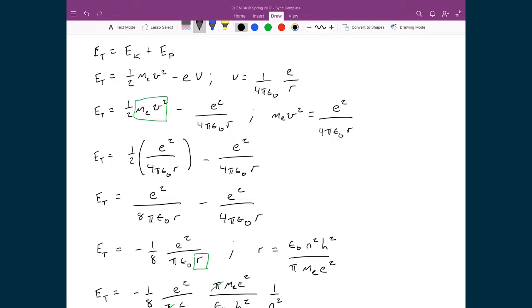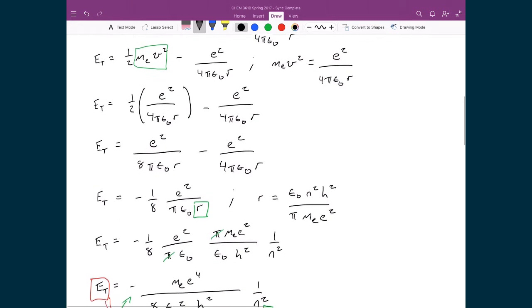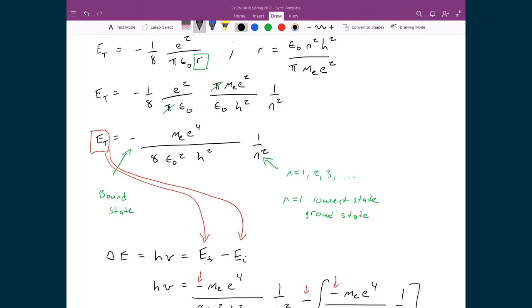We then substituted in terms that we had calculated before, including the radius, the Bohr radius, or the radius of the allowed orbits, and what we ended up with was this term: the total energy is equal to negative times mass of the electron times the elementary charge raised to the power of 4 divided by 8 ε₀² times h², and that's multiply 1 over n².